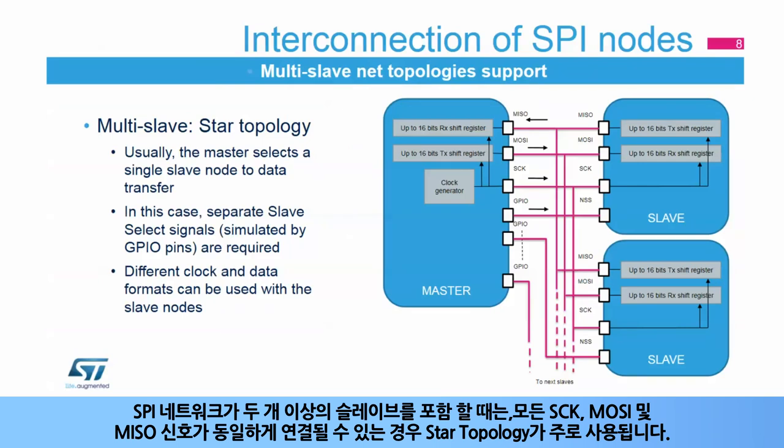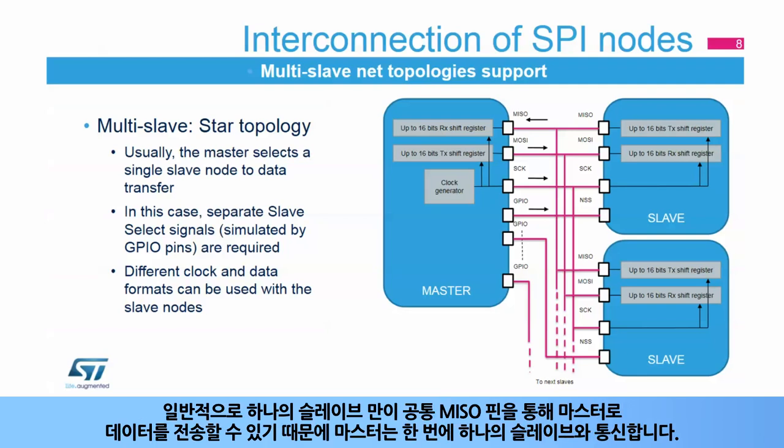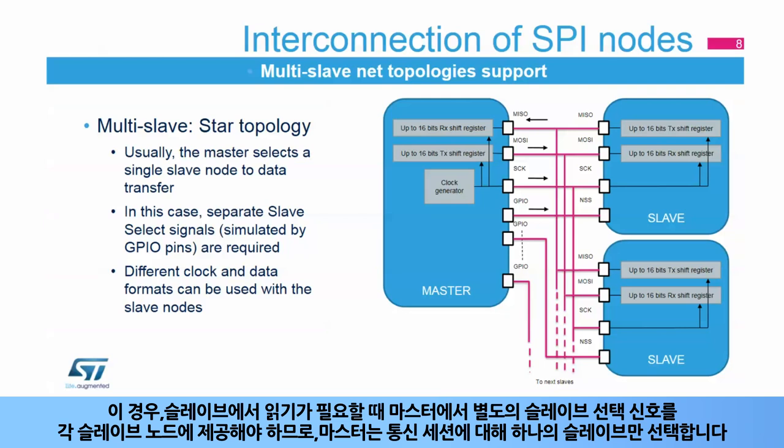When the SPI network includes more than one slave, a star topology is commonly used when all the SCK, MOSI, and MISO signals are interconnected. Usually, the master communicates with one slave at a time, since just one slave can transmit data back to the master through the common MISO pin. In this case, when reading from slaves is required, a separate slave select signal from the master has to be provided to each slave node, so the master selects just a single slave for a communication session.